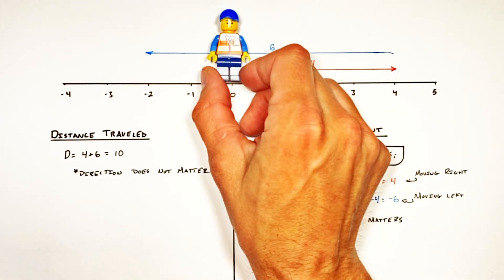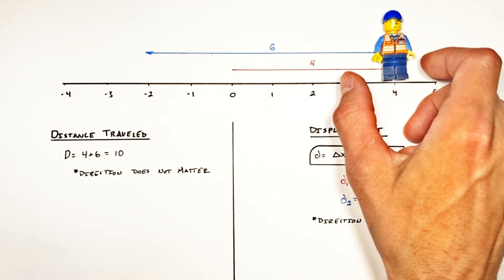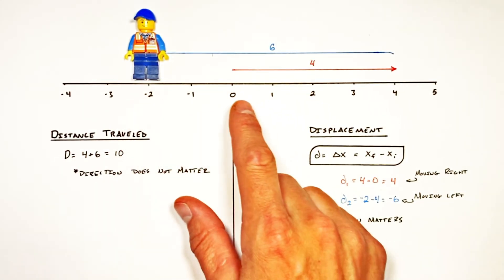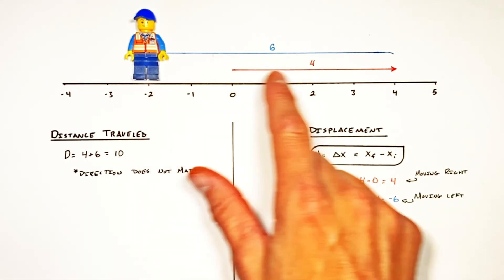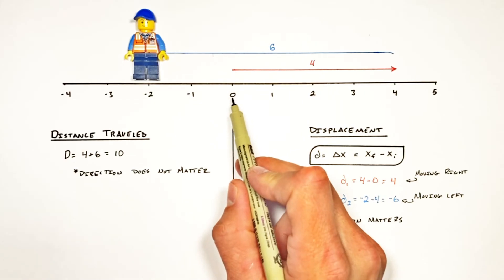Now ultimately our little guy started here, went over to the right and had a positive displacement in the first phase of motion. And then boom, went all the way over to the left here. From start to finish of everything that our dude did, the total displacement will be the final position.